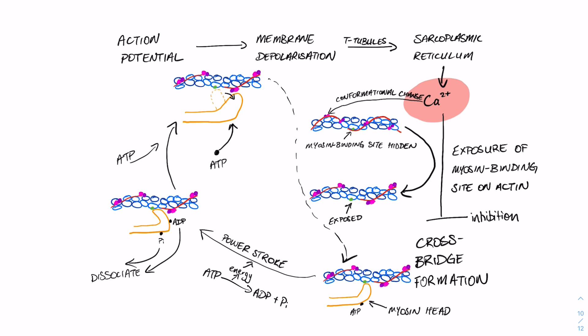However, when we get a decrease in calcium levels in the muscle, that basically means that myosin binding site remains hidden and covered up by tropomyosin and therefore the cross bridge cycle cannot occur.